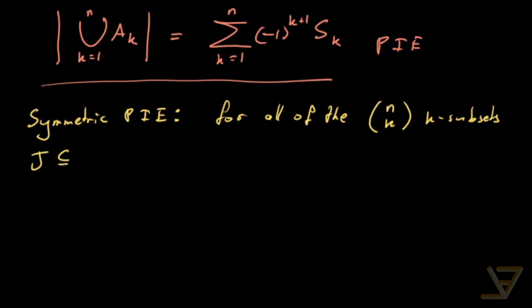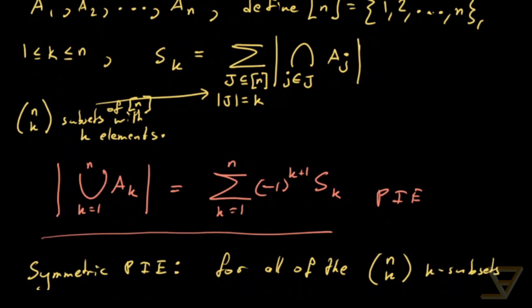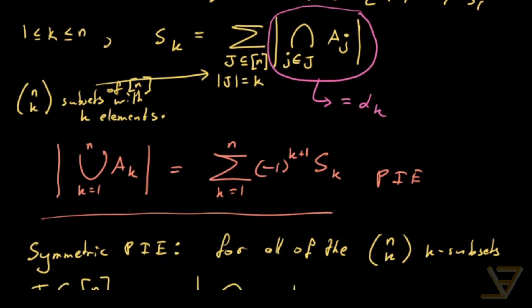J subset of n, it holds that the intersection of the little j's in J, Aj, is equal to alpha k. So, what I'm saying is that, these things over here, these sum n's, they're all equal to alpha k, for some alpha k. For each k it's fixed.